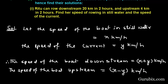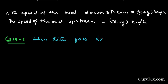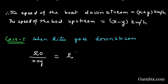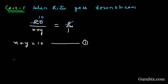Case 1: When Ritu goes downstream, she covers a distance of 20 km at a speed of x plus y km per hour. Using distance divided by speed equals time, and the time is 2 hours, we get 20 divided by (x plus y) equals 2. Cancelling 2 with 20 gives 10, and cross multiplying gives us x plus y equals 10. This is equation number 1.